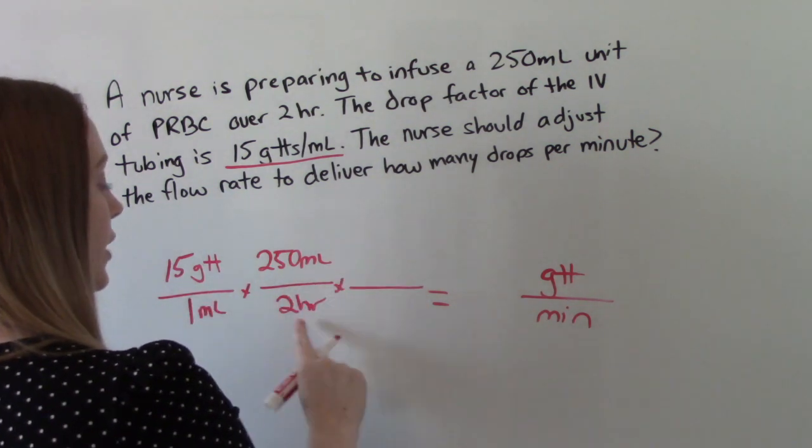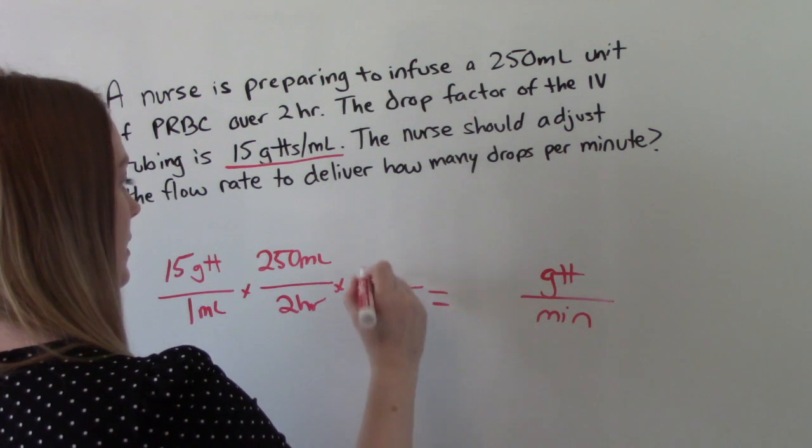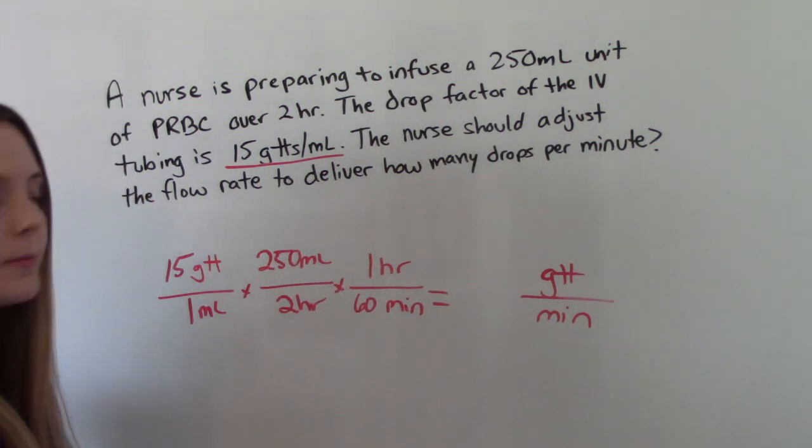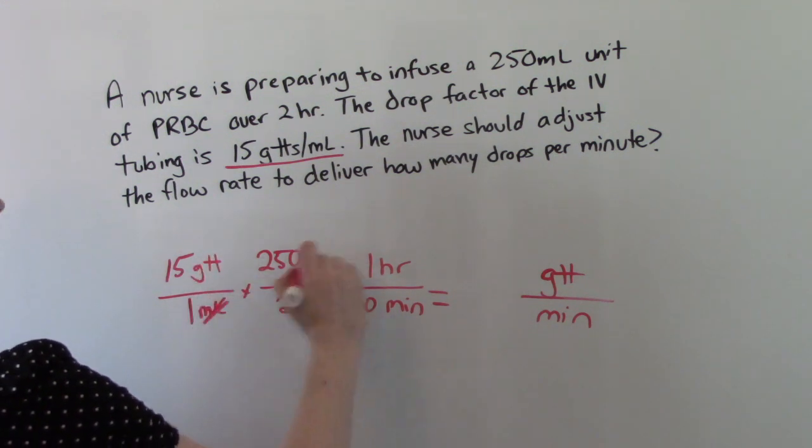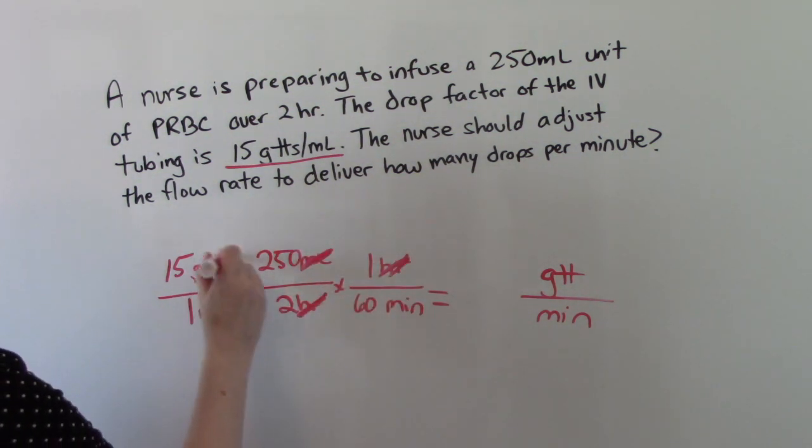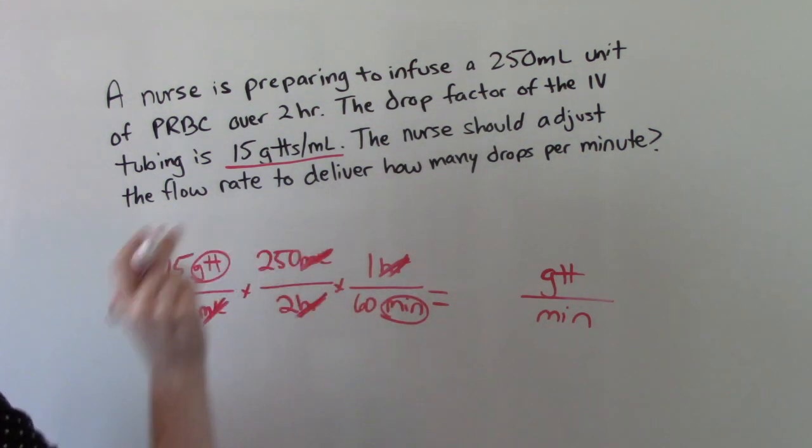And then we are going to convert hours to minutes because we want to end up with minutes. So 1 hour is 60 minutes. So we'll cancel our ml's. We'll cancel our hours. We'll end up with drops over minutes. Punch it into your calculator.